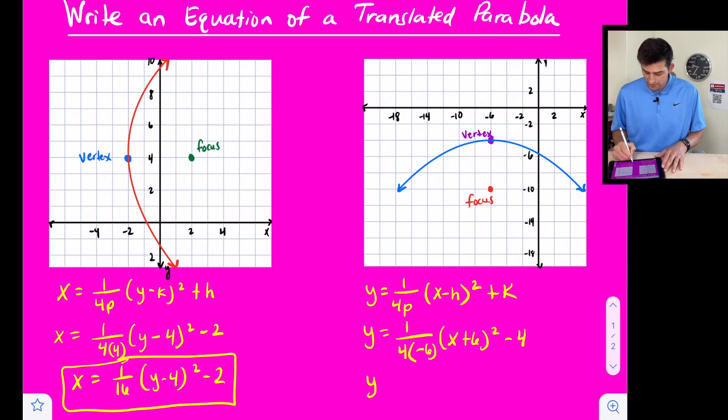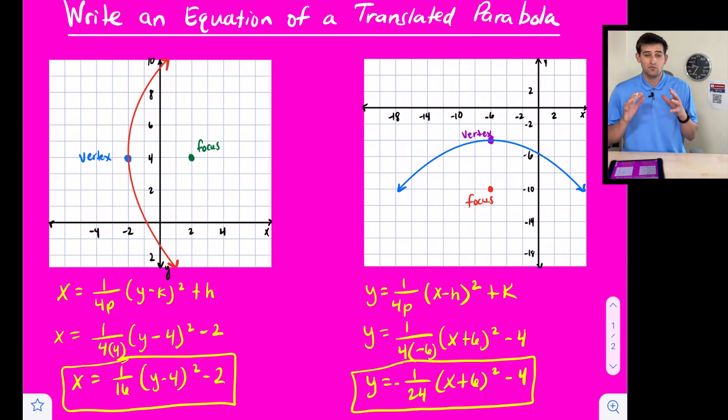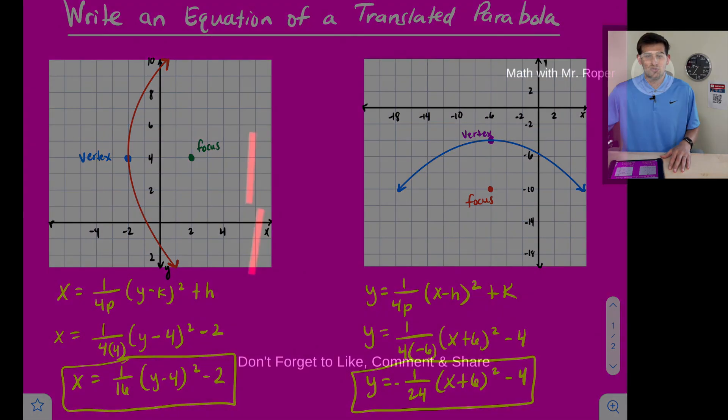Now we can simplify this. We get Y equals, or we could write our negative out at the front, negative 1 over 24, and then in parentheses, X plus 6 quantity squared, and then minus 4. That would be our equation for our second example. That's how you can write an equation of a translated parabola.